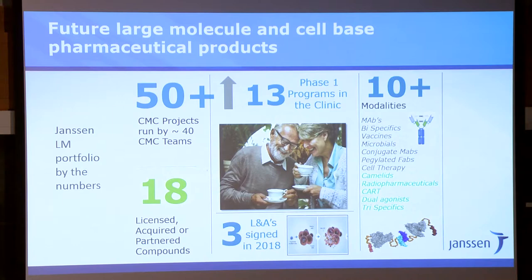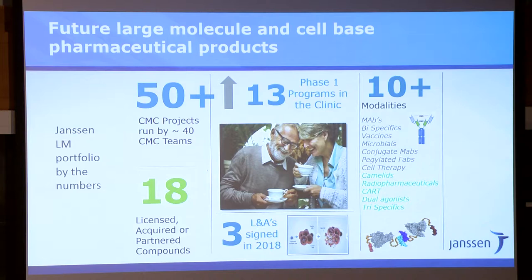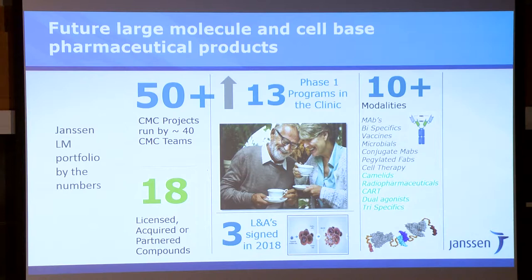Here's an example of what we're doing in large molecules at Janssen today. It's a big portfolio — about 50 projects of different kinds and at different stages of development. About 18 of them are recent license and acquisition deals, three of them in 2018 alone. Thirteen programs recently entered the clinic. There are at least 10 modalities, and they are in flux. Some of them are very new and we're still learning how we're going to do them.